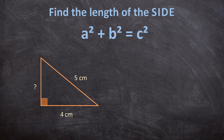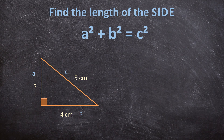Before we start, remember to always name your sides. In our formula we have A, B, and C. We need to name our sides A, B, and C, where C is always the hypotenuse. The other two sides you can switch, but C is always the hypotenuse opposite the right angle.